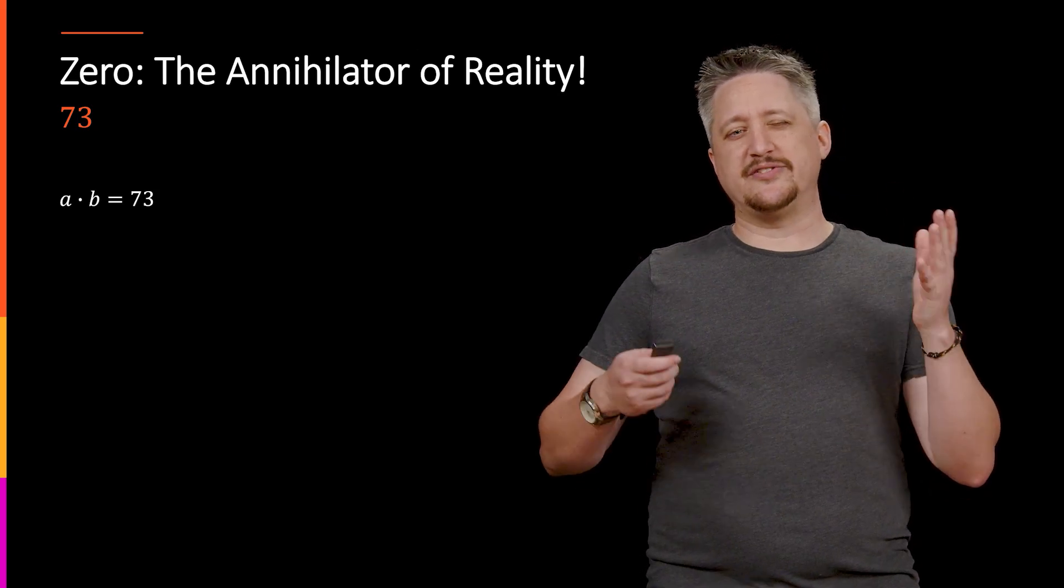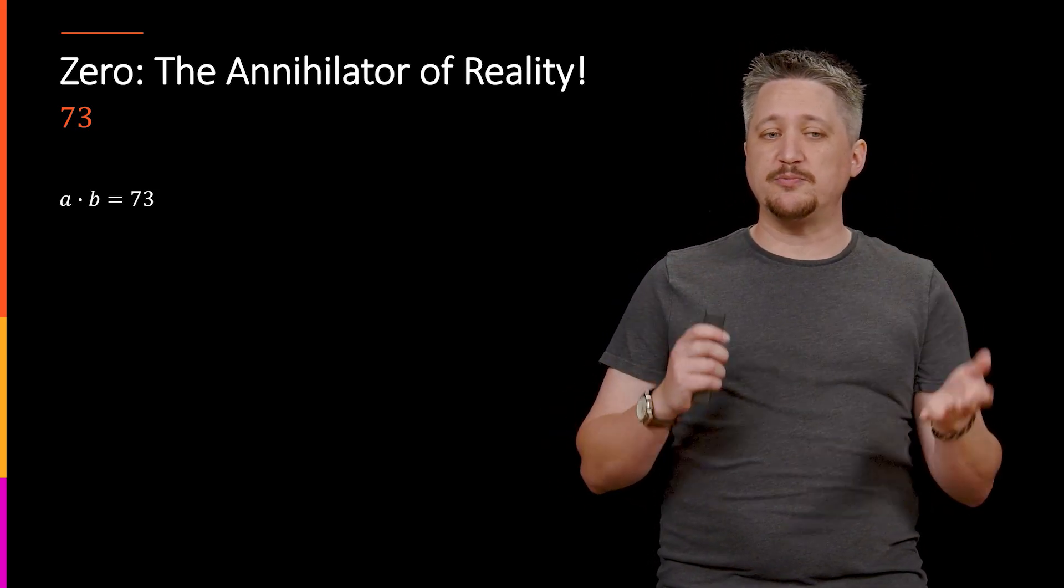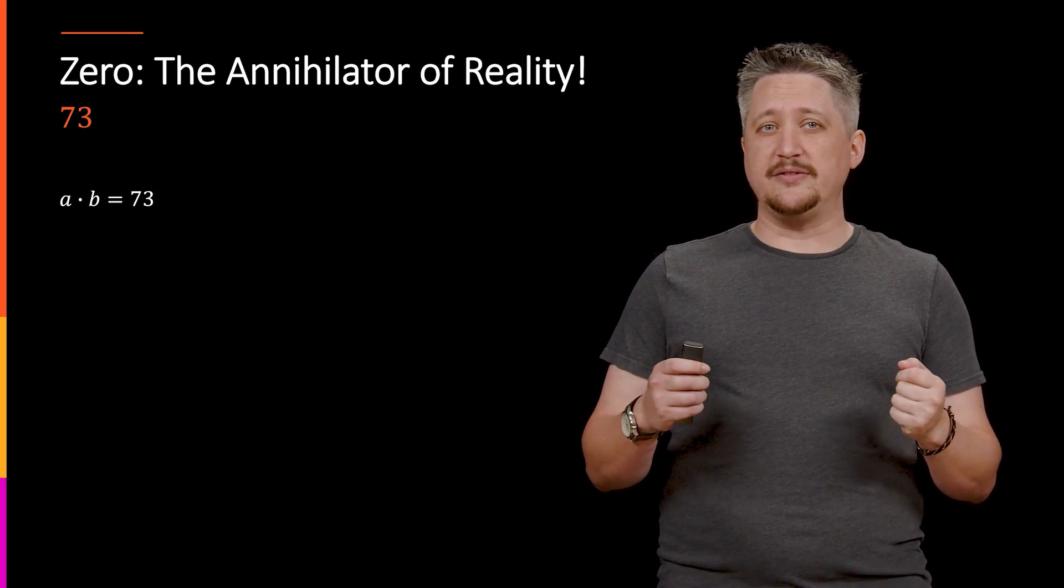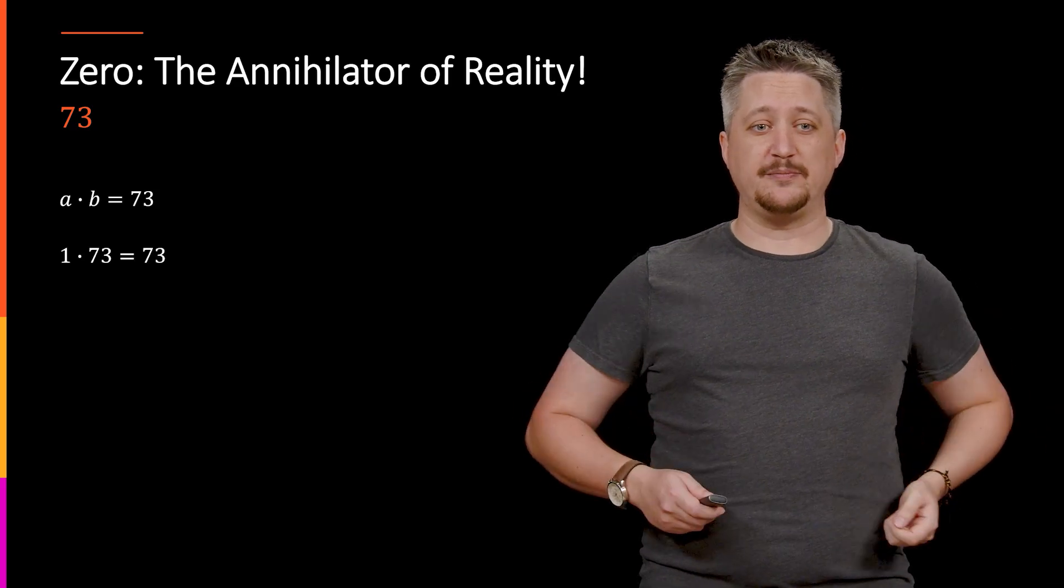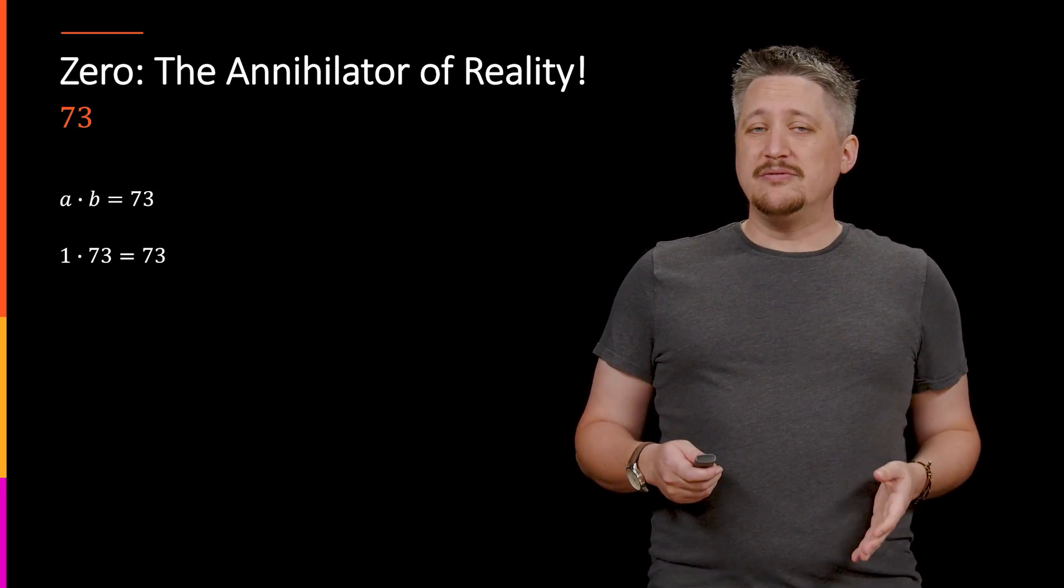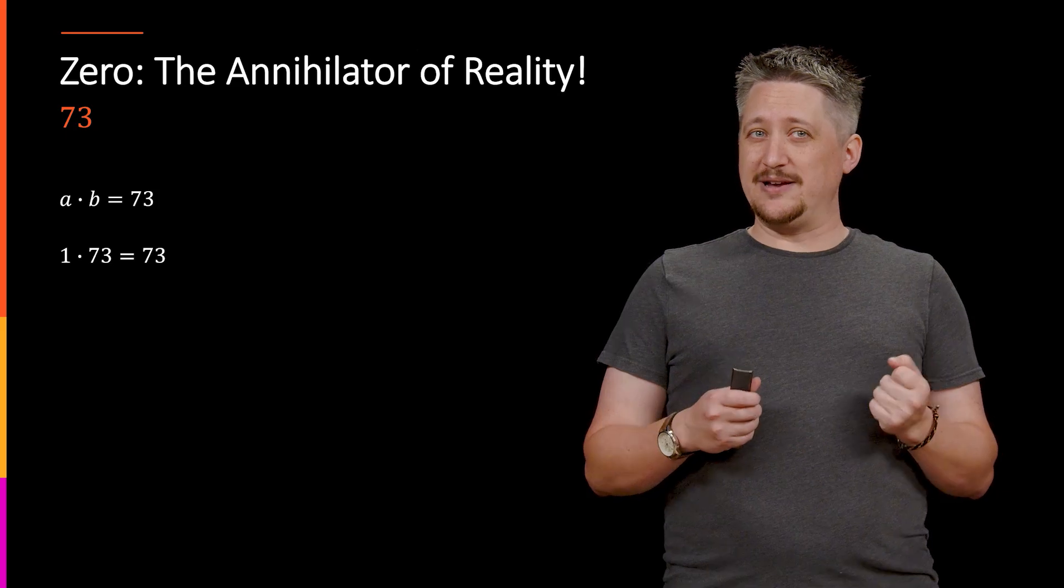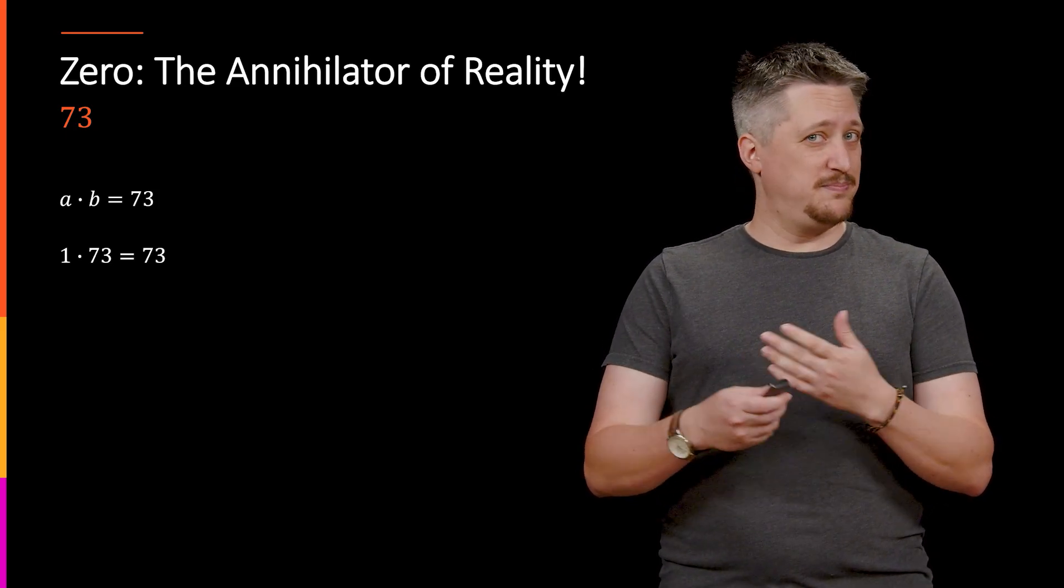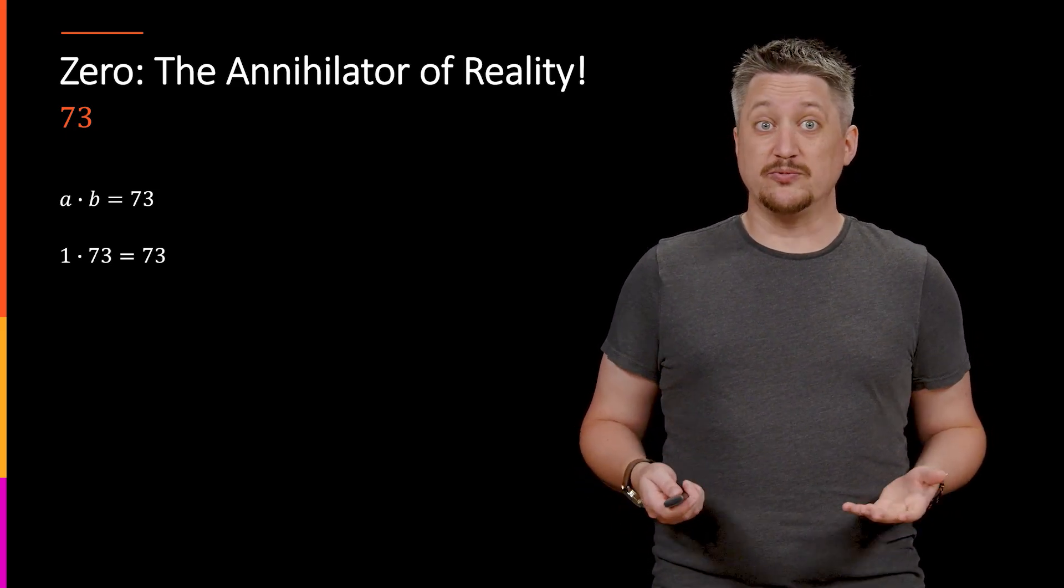Now, you might be thinking, OK, well, is 73 prime? Because if 73 is prime, then maybe that tells us that one of them has to be 1 and one of them has to be 73. Well, that would be true if we knew A and B were whole numbers, but we don't. We only know that A and B are real numbers.